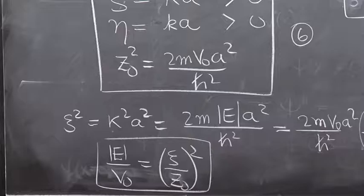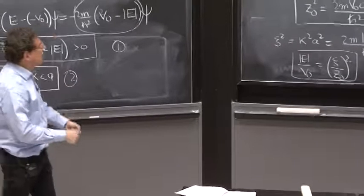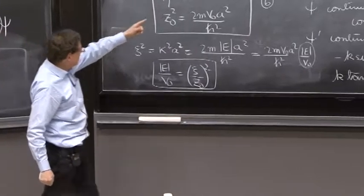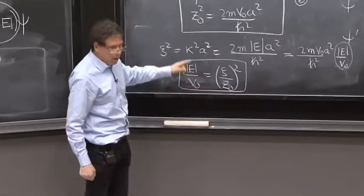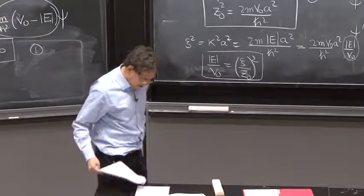And this is something just to keep in mind. If you know ψ, you certainly must know z₀, because that's knowing your potential. And then you know how much is the energy. That's the energy, all very convenient things.